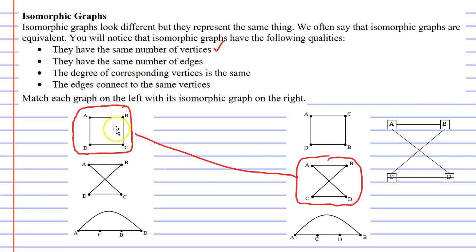The next point says they have the same number of edges. They all have four edges. So we'll tick that. In fact, you'll notice that every single graph has the same number of vertices and edges.